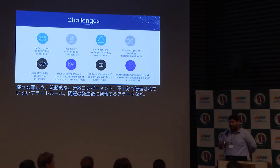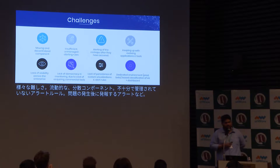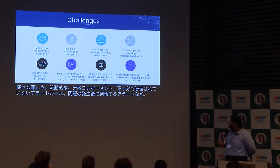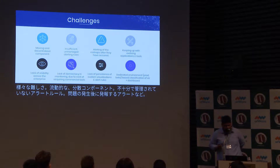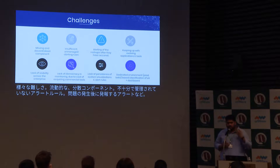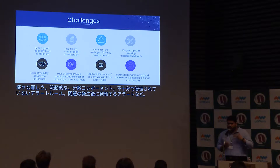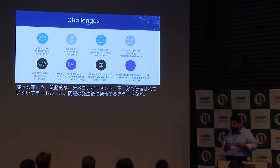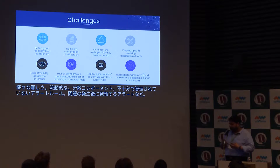Lack of persistence of custom visualizations and alerts is another important point. Suppose I use any monitoring tool, create custom dashboards and alerting rules — but what about persisting them? If Prometheus or any monitoring tool goes down, all those alerting rules and visualizations are gone with no mechanism to recover them. There's also the challenge of dedicated environment-based classification of dashboards — managing a single dashboard that shows beta, staging, and production environments in one place is quite tricky.